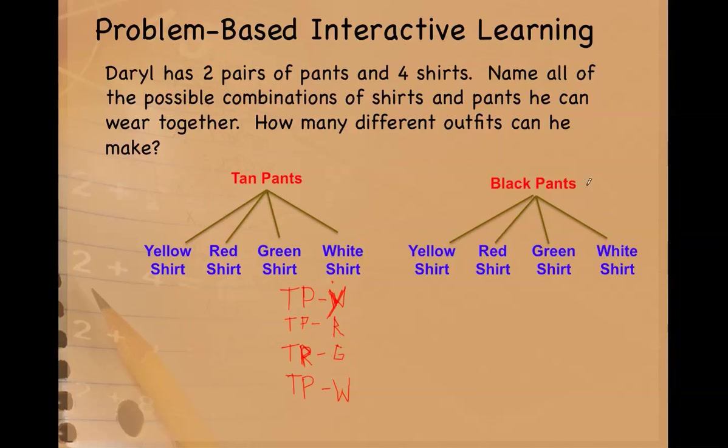Now I'm going to do the same thing using my diagram tree. I'm going to create the organized list. Black pants, black pants, with a yellow shirt.